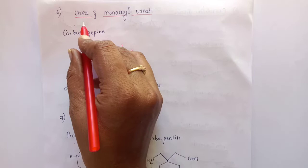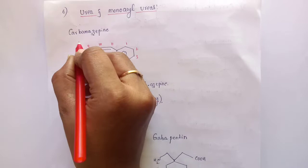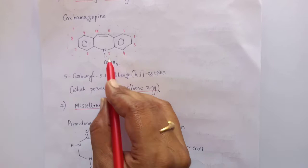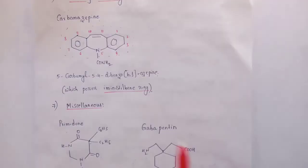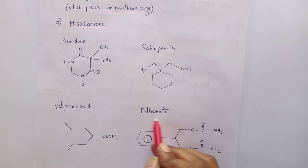The 6th class of compounds are urea and monoacylureas. An important example is carbamazepine, which possesses an iminostilbene nucleus. For this iminostilbene, it consists of a carbamide group — hence the name carbamazepine. The chemical name is 5-carbamoyl-5H-dibenz[b,f]azepine, a seven-membered ring with nitrogen. The miscellaneous compounds include primidone, gabapentin, valproic acid, and felbamate.